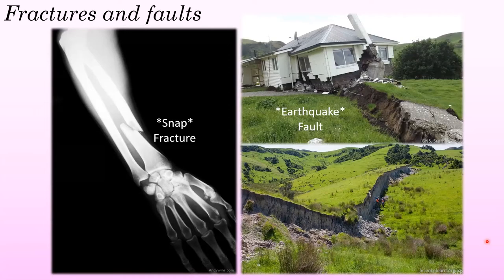The earth's upper crust is similar to a human bone — both are strong but both are brittle. If I were to fall and the force of that impact exceeds the strength of my bone, my bone will snap and fracture, and this is exactly what happens in the earth's upper crust when forces from opposing tectonic plates exceed the strength of a rock, except we call that snap an earthquake and the fracture a fault.